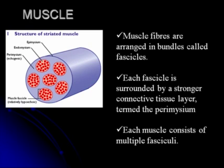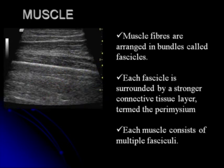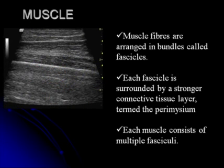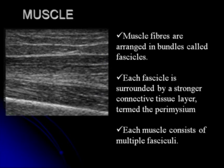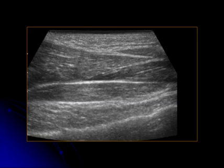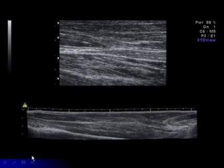Muscle fibers are arranged in bundles called fascicles, and each fascicle is surrounded by a stronger connective tissue layer termed perimycium. Each muscle consists of multiple fasciculi. On ultrasound, the muscle has a normal pennate pattern of multiple hypoechoic lines converging to the central pennate. This is a zoomed-up view of the muscle. A normal view shows multiple fascial planes separating the muscle bundles, and an extended field of view shows the entire length of the muscle.